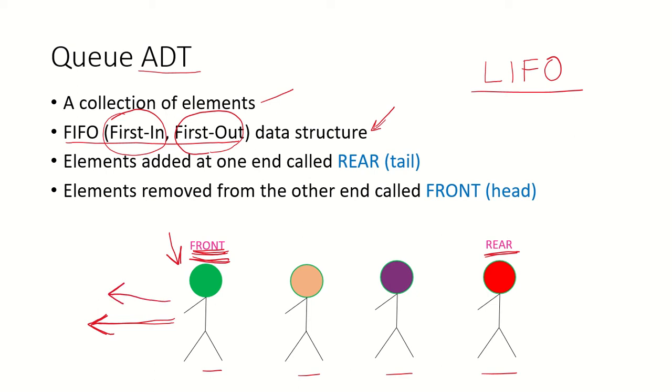If a new element has to be added, it will be added at the rear end. There are two ends to the queue: front and rear. There was only one end to the stack, called the top. Elements in the queue can be added only from the rear end and removed only from the front or head.